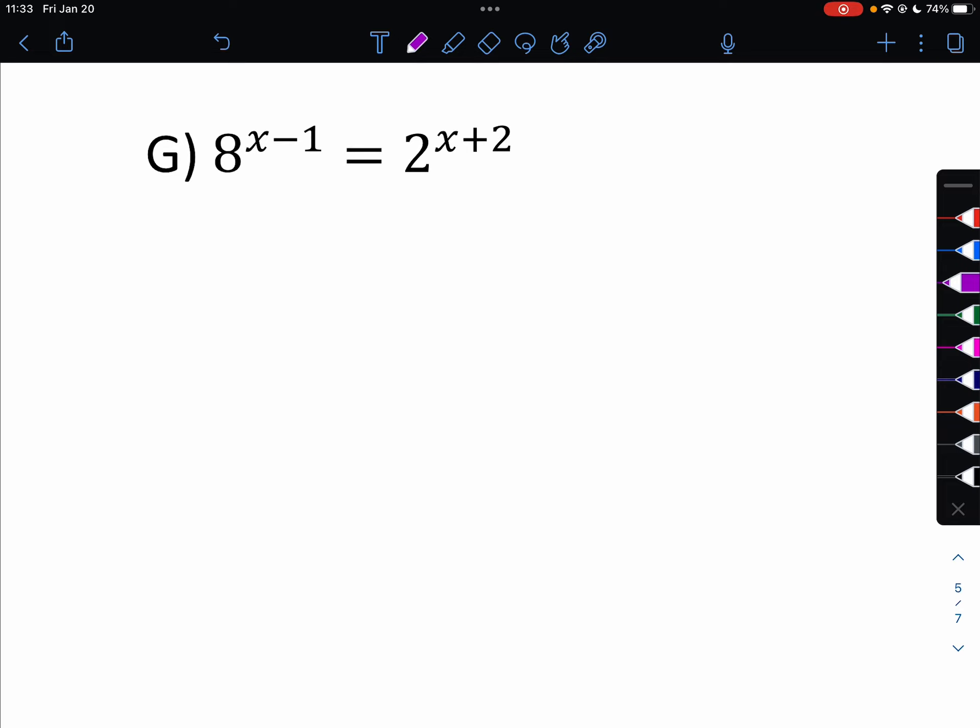Okay, number 8. I'm sorry, letter G. We can go ahead and write this as powers of 2. So 2 to the 3rd, x minus 1, 2 to the x plus 2. Like bases. So 3x minus 3 equals x plus 2. Solving that, we get x is 5 halves.